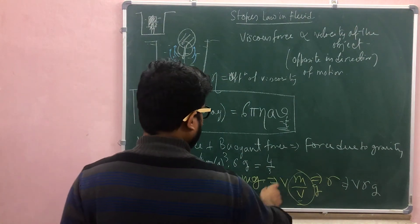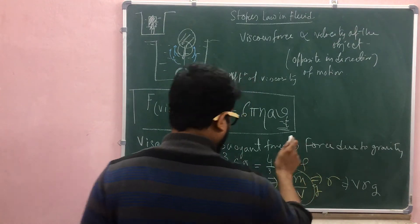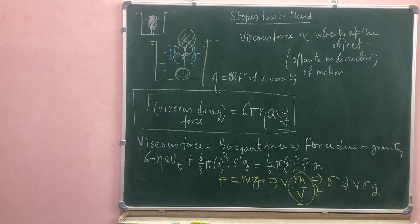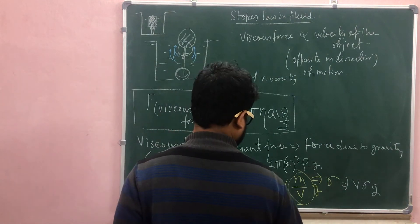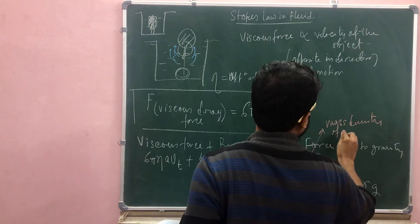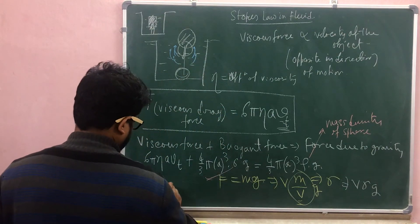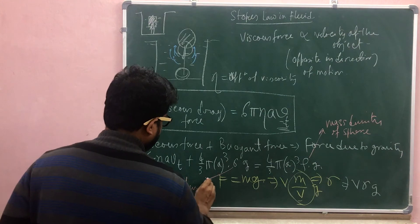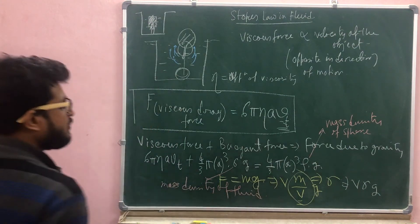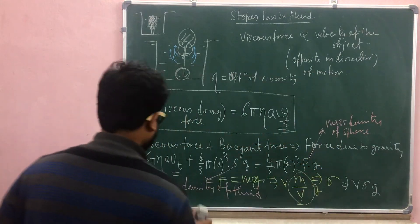We can define the force: the volume of a sphere is 4/3 pi a cubed. So the force due to gravity is 4/3 pi a cubed rho g, and similarly the buoyant force is 4/3 pi a cubed sigma g. Here sigma is the density of the fluid and rho is the mass density of the sphere. Terminal velocity is denoted as vt.